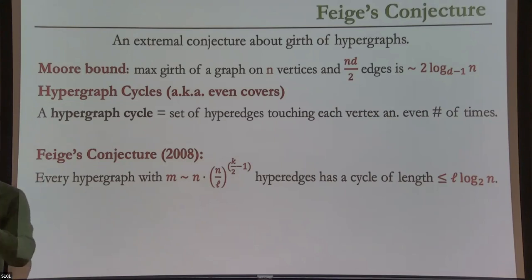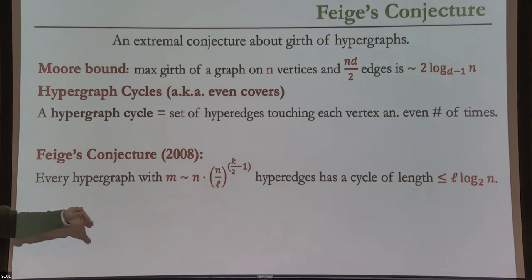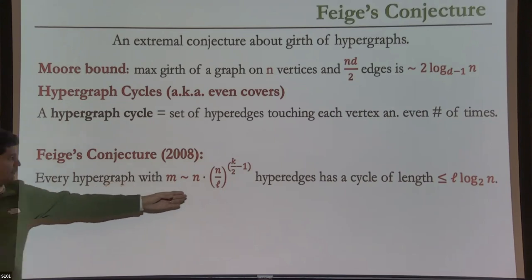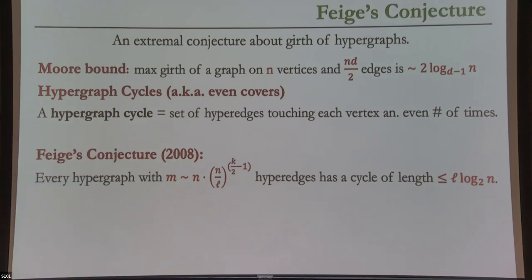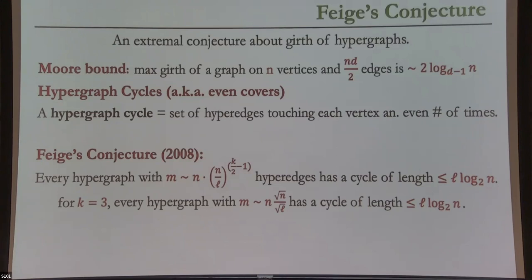The very interesting part is that in the graph setting there's a phase transition from girth L to girth log N, but in the hypergraph setting there seems to be a larger gap. If L=1, the conjecture predicts only a log-length cycle; but if the conjecture is tight, with only N hyperedges you should really expect an N-length cycle. This is not so hard to believe: if you take N+1 random linear equations, you'd expect the smallest linear dependency to be Omega(N).